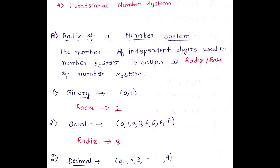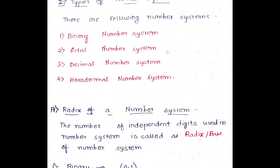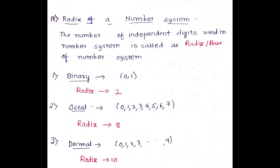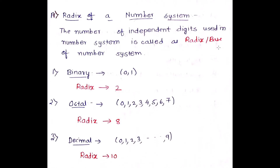What is the radix of a number system? The number of independent digits used in a number system is the radix, or the base, of the number system. Each number system — binary, octal, decimal, hexadecimal — has independent digits, and the count of those independent digits is called the radix or the base. Both terminologies mean the same thing.